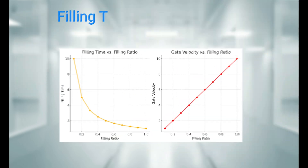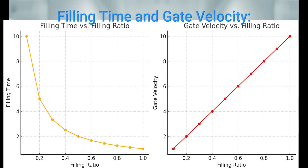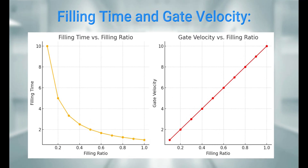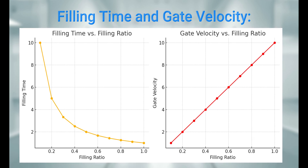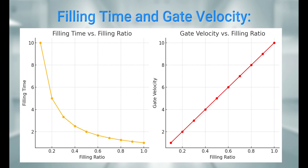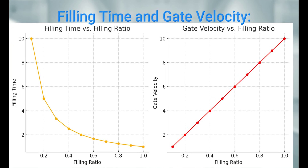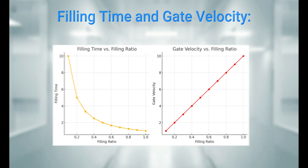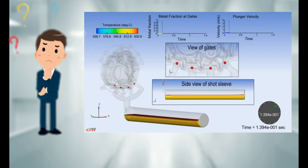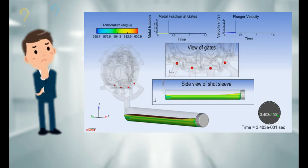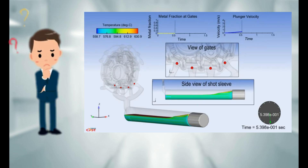Next we have filling time and gate velocity. A higher filling ratio decreases the filling time as more metal is injected quickly. This also increases the gate velocity, which is the speed at which molten metal flows through the gate into the cavity. Higher gate velocity can help in better cavity filling, but it can also cause turbulence if not controlled properly.